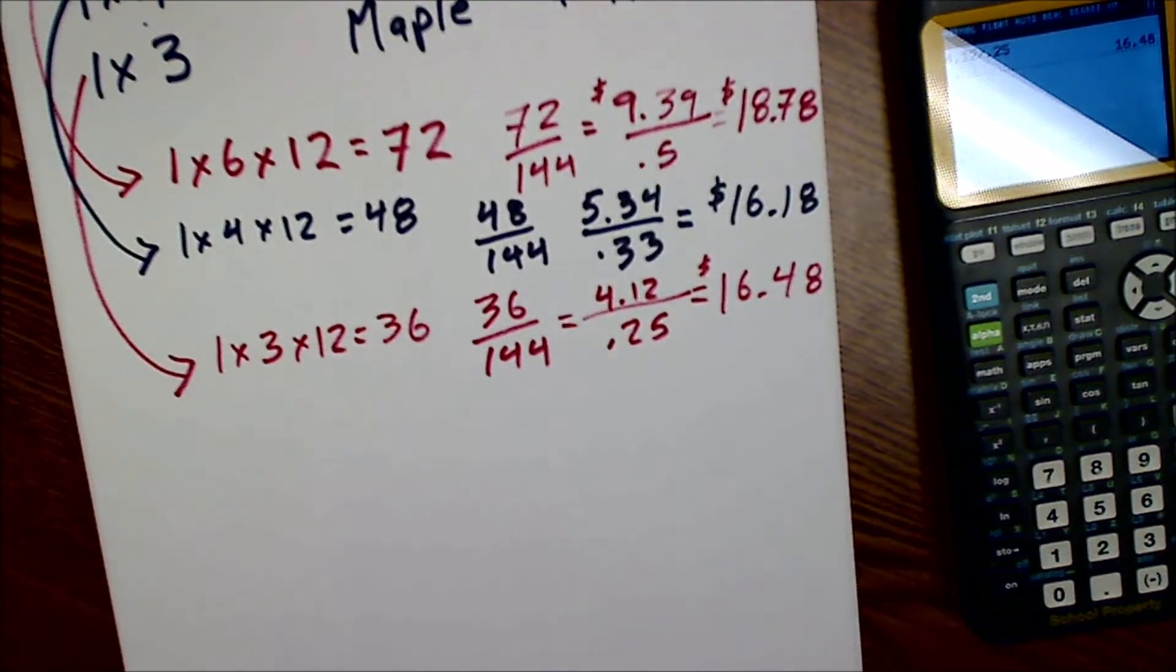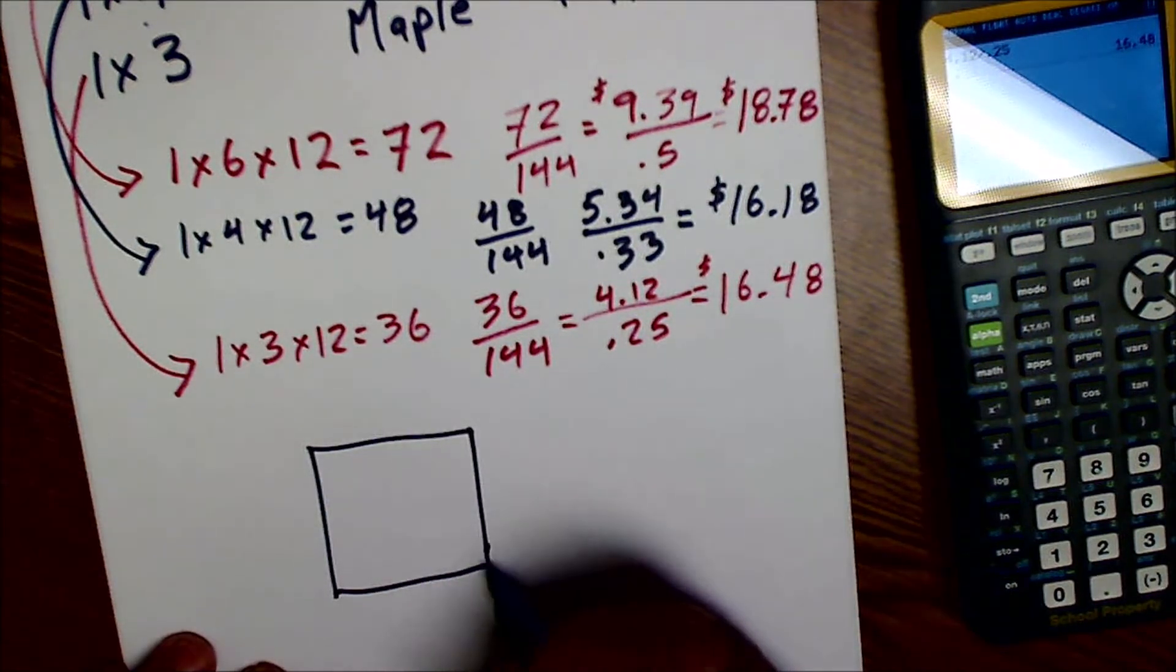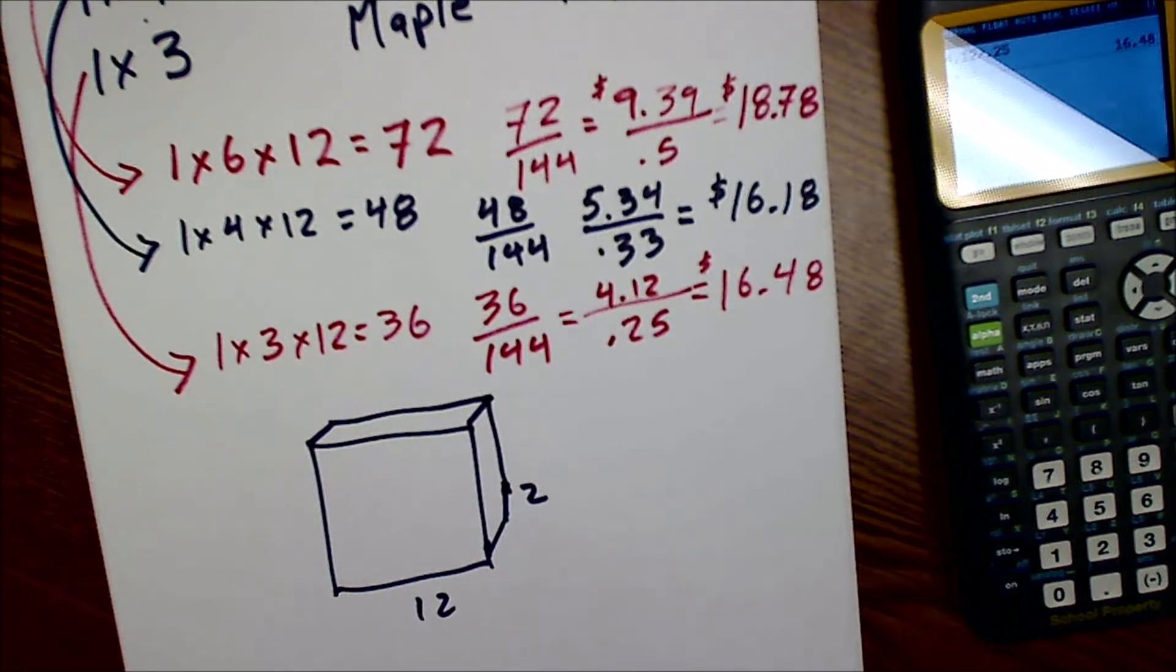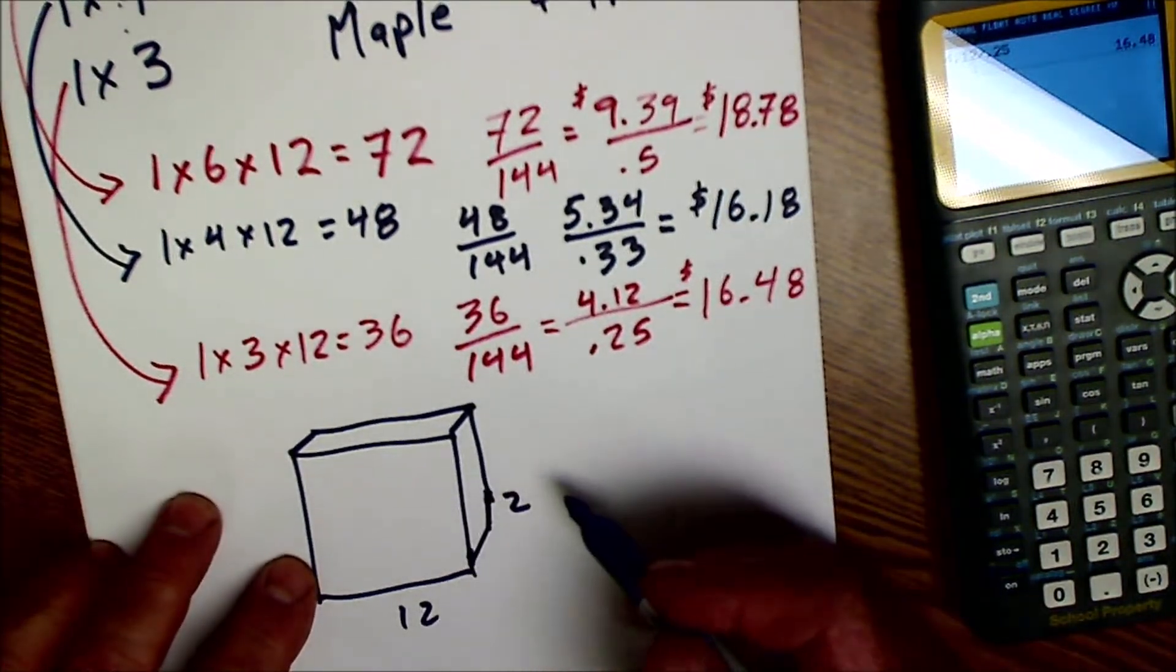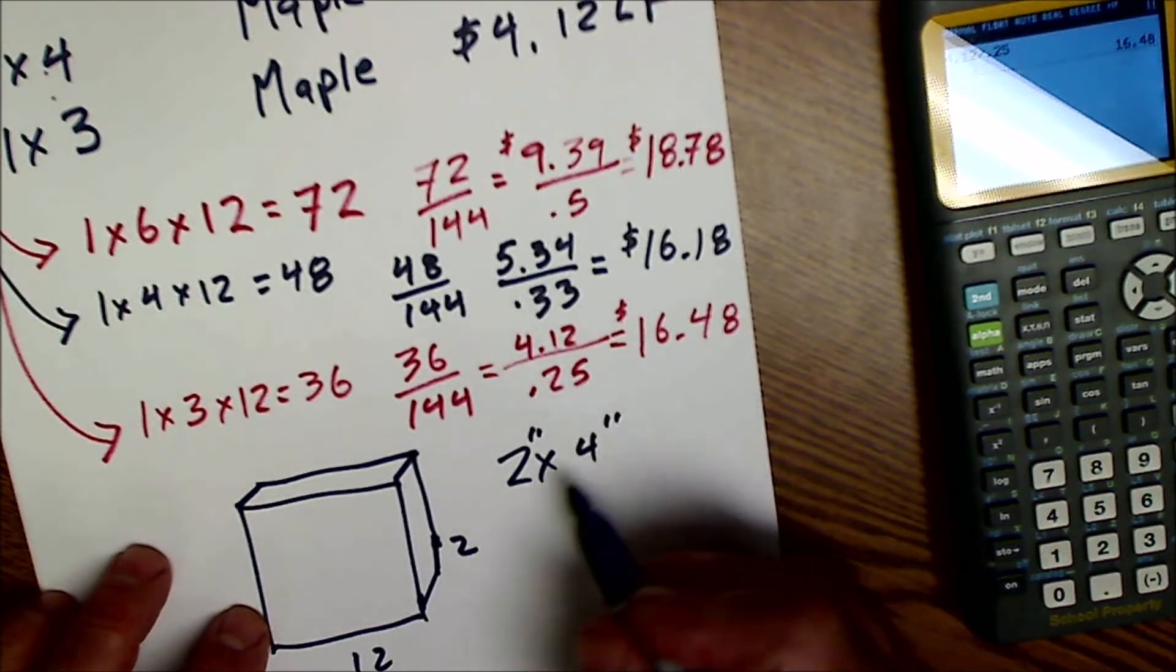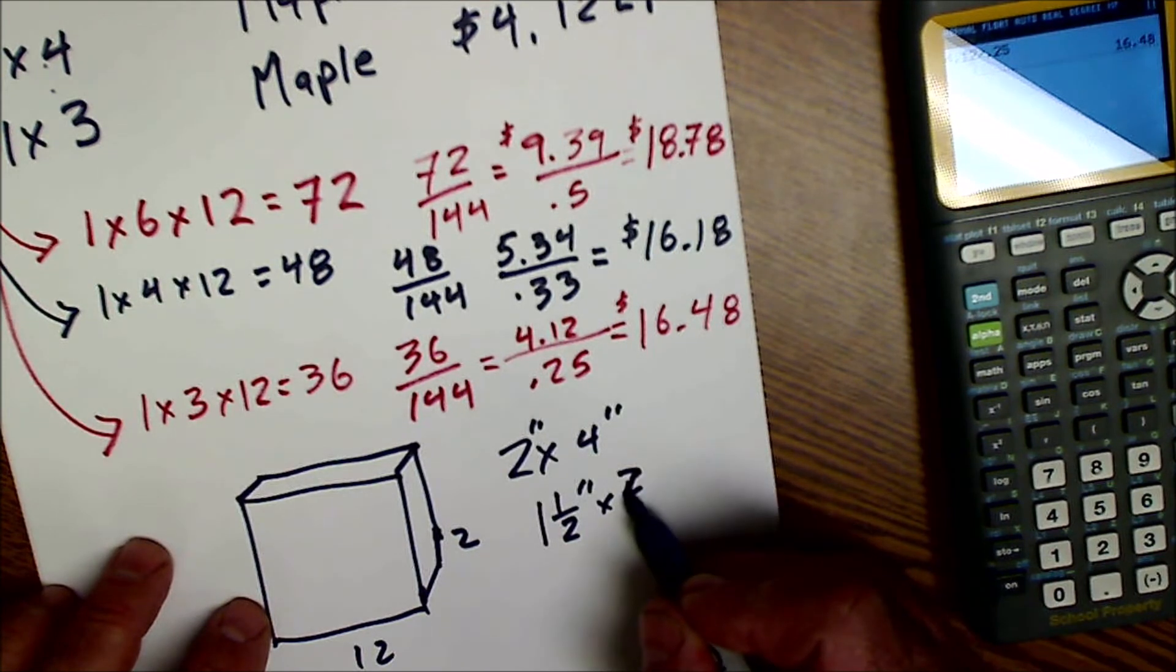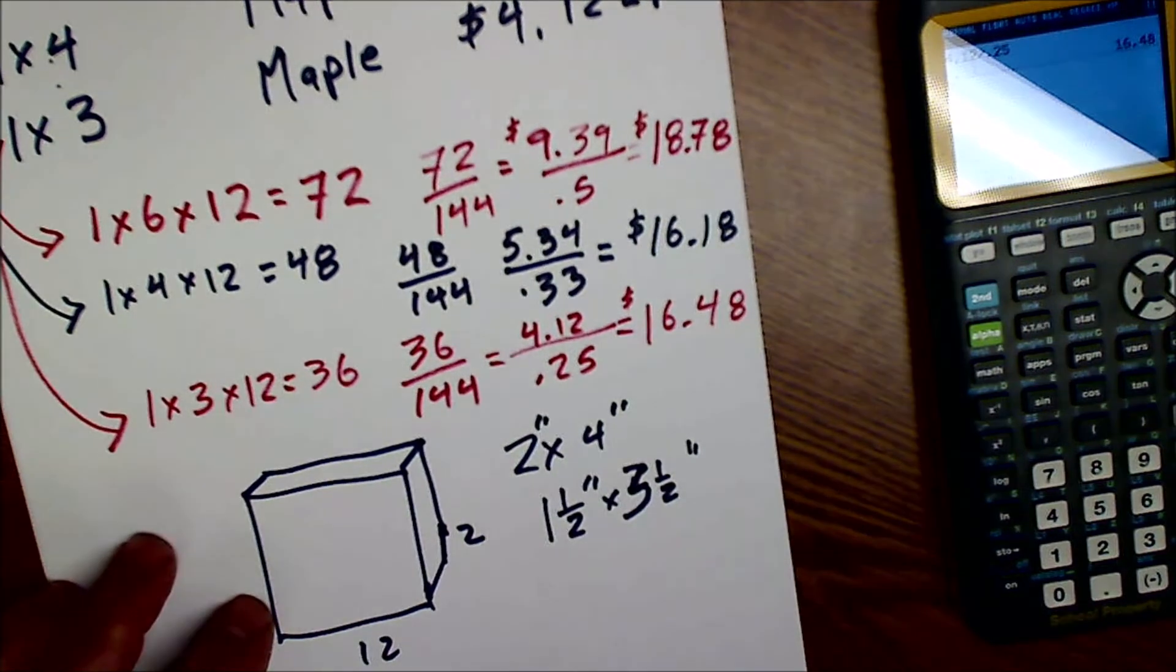Alright, well I hope that helps in figuring out what a board foot is. Again, a board foot is a cubic measurement. It is 12 inches by 12 inches by 1 inch deep. Nominal means what the material is called by. So you use the nominal measurements in finding the board feet. So if you have a 2 by 4, you know it's called a 2 by 4, so the nominal dimensions are 2 by 4. But in actuality, it's 1 and a half inches by 3 and a half inches.